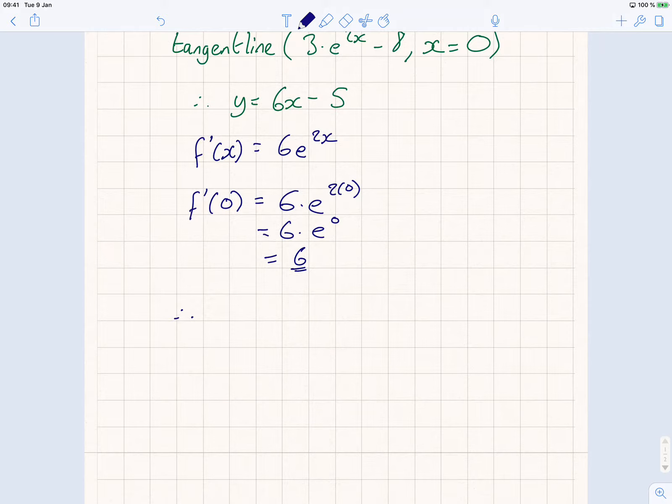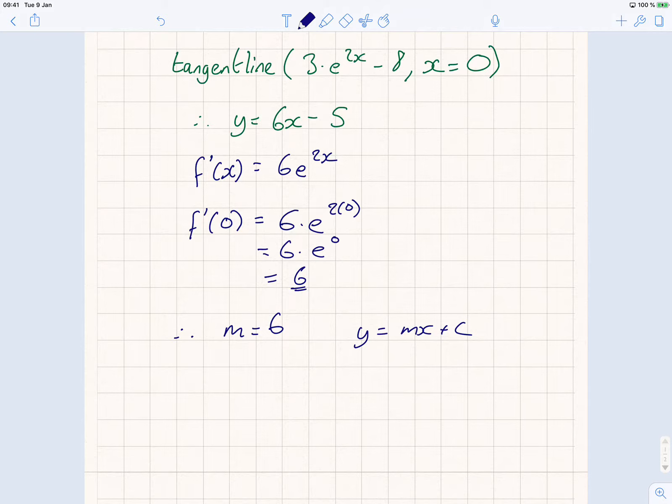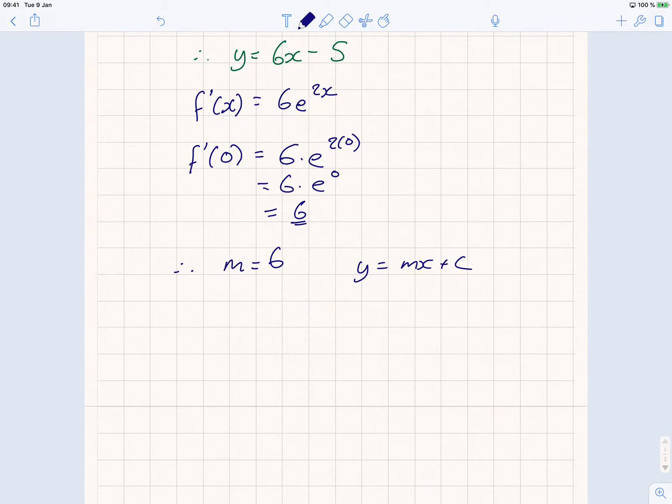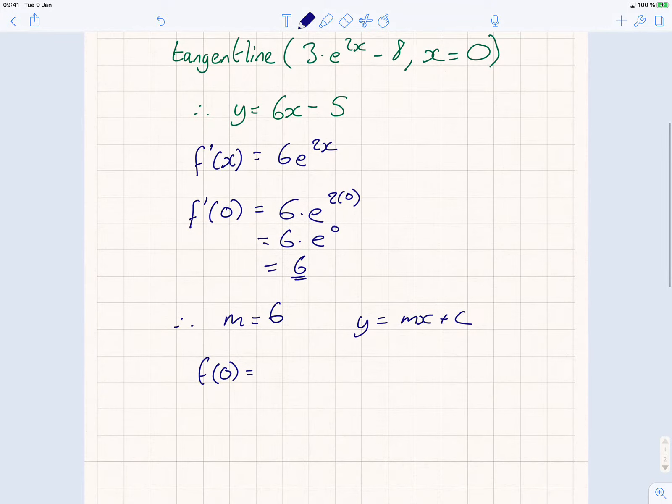Therefore, I know that m is equal to 6, so I have y is equal to mx plus c. Do I know what the value of y is? No, not yet. So, I need to put in the value of y into f of x. Remember, f(x) is equal to 3 times e to the 2x minus 8.